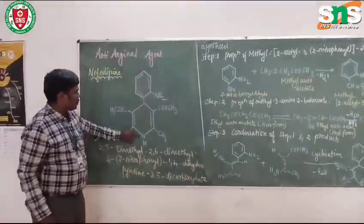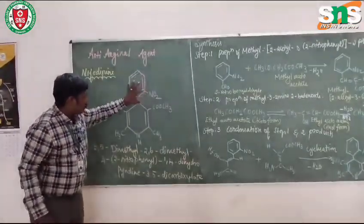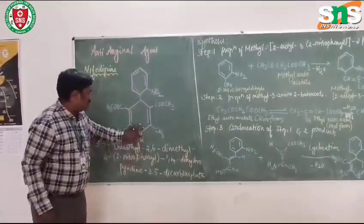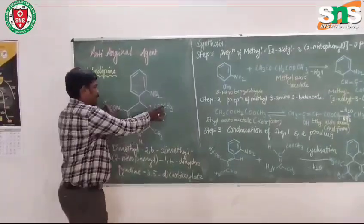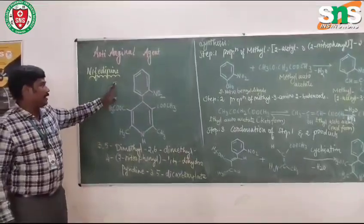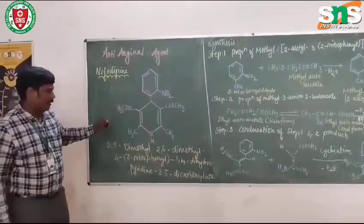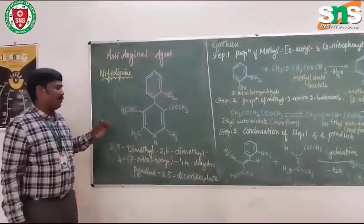Then in fourth position, phenyl. So, 4-phenyl-2,6-dimethyl-1,4-dihydropyridine. So this is the chemical name of dipthipine, that is 3,5-dicarboxylate, 2,6-dimethyl.